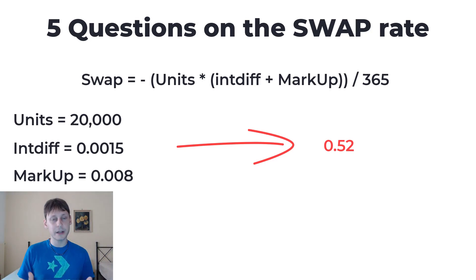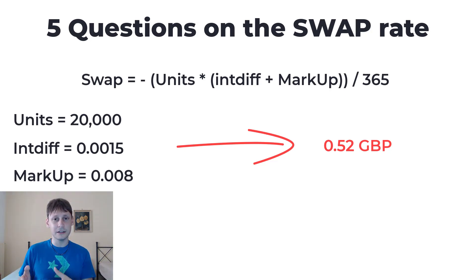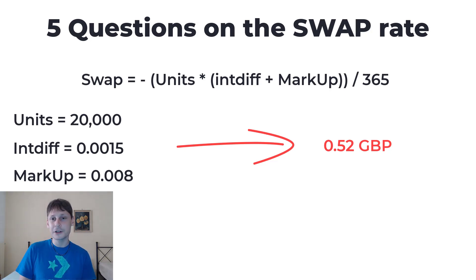That 0.52 is in the base currency — since we are trading pound against US dollar, the base currency is pound, so it's 0.52 pounds. If your trading account is in dollars, you also need to convert 0.52 pounds into dollars. You can see it is quite complicated, but you don't need to go through this every time. You can simply check your broker's website for the swap interest rate they charge or pay for each currency pair and each position type — long or short.